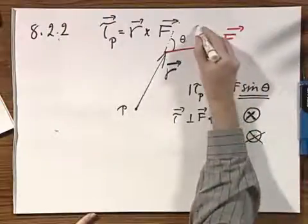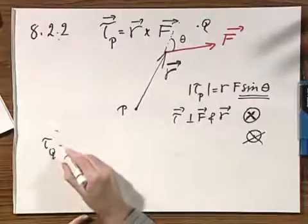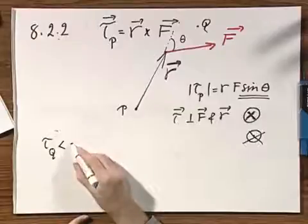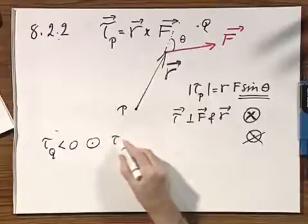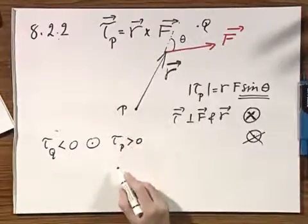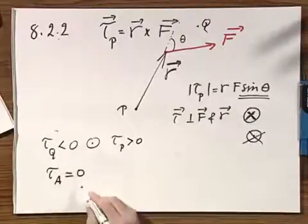If I had a point Q here, then the torque relative to point Q would be negative. And so the torque would be coming out of the paper. In our case, the torque P is larger than zero. And you can have torques relative to points which are zero.